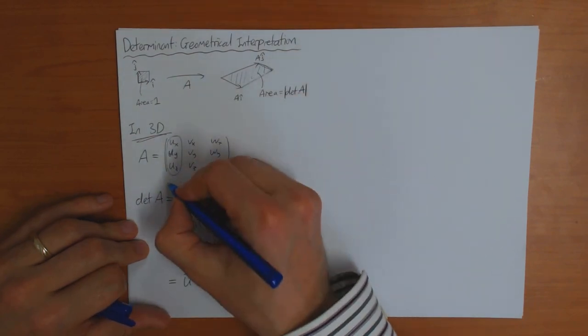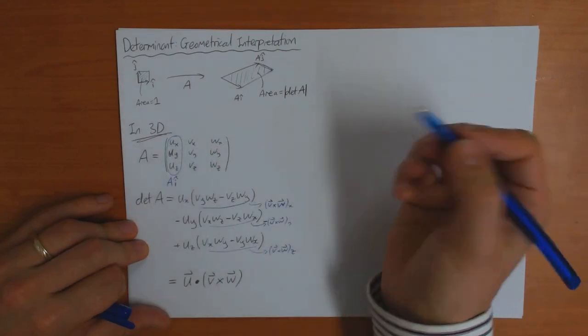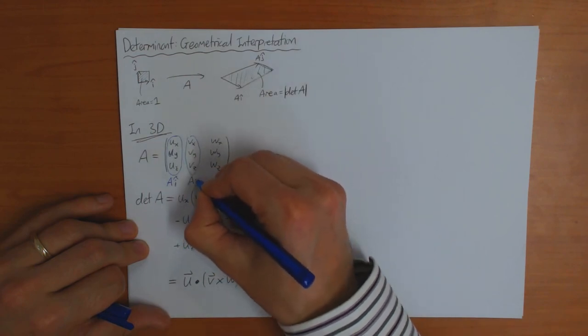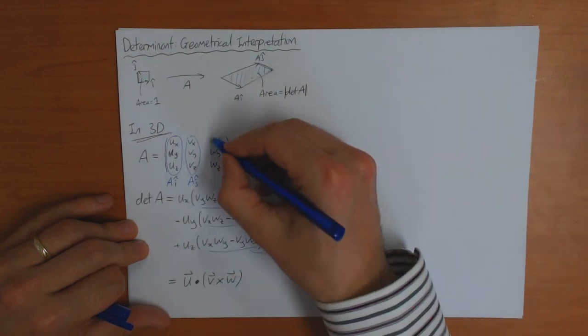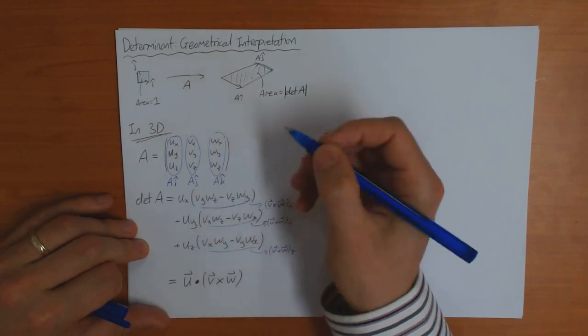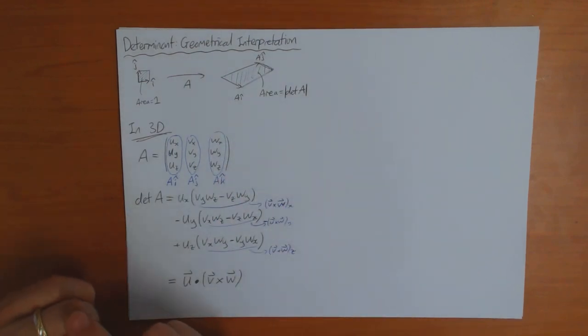this first column here tells you what A does to the first basis vector. So this is A of I. The second column here is what A does to the second basis vector. This one here is what A does to the third basis vector.